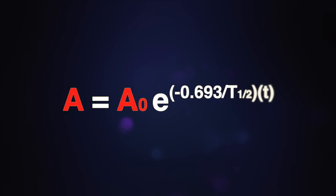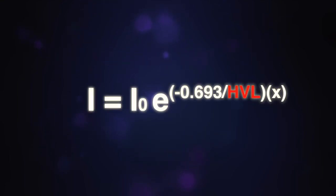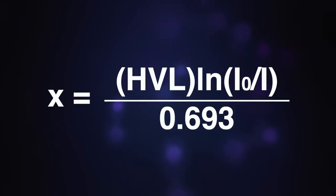So instead of activity, I'm going to use intensity. Instead of time, I'm going to use thickness of attenuator, and instead of half-life, we're using half value layer. Then we can work out that formula so that we are solving for thickness of attenuator rather than final intensity.